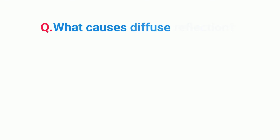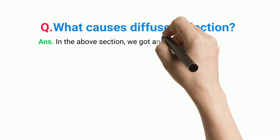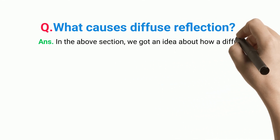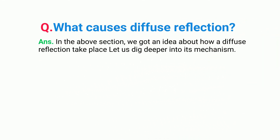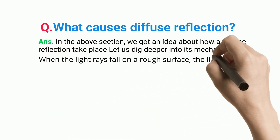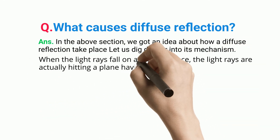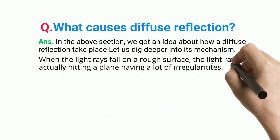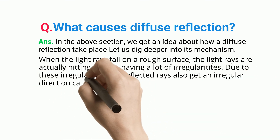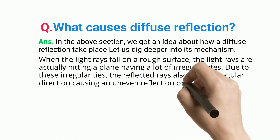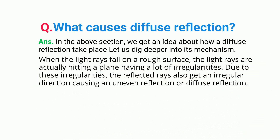What causes diffuse reflection? When the light rays fall on a rough surface, the light rays are actually hitting a plane having a lot of irregularities. Due to these irregularities, the reflected rays also get an irregular direction, causing an uneven reflection, or diffuse reflection.